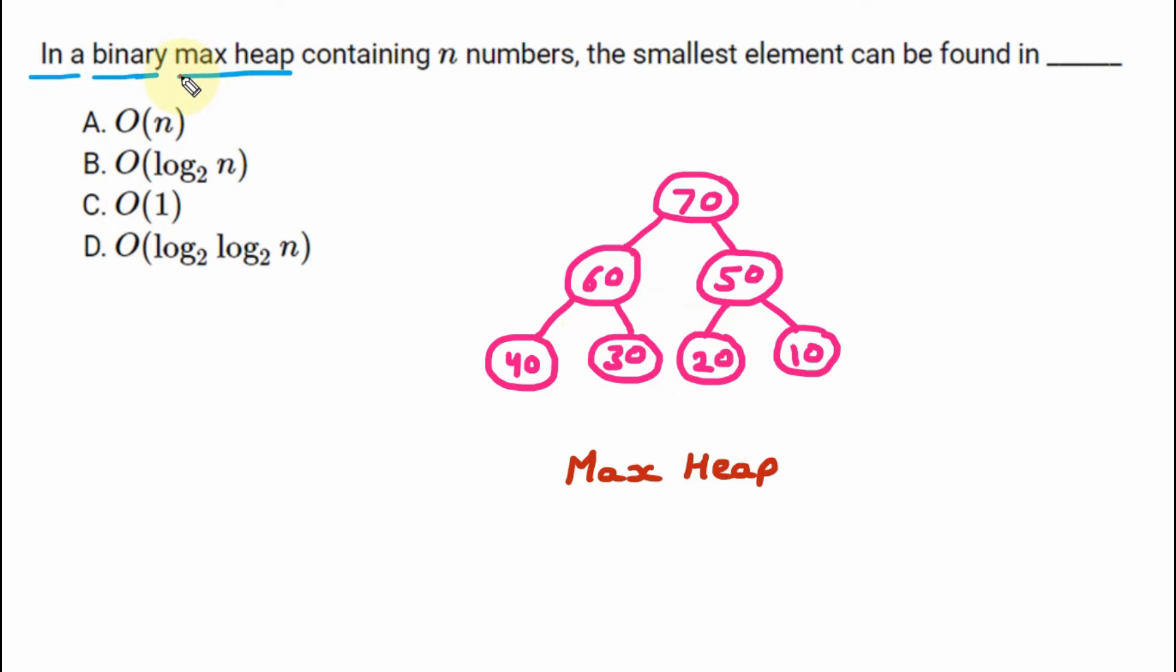So here we have the max heap and we can see that all the nodes, let's say 70 have 2 children, 60 have 2 children, 50 have 2 children, means they can have maximum 2 children. That's why it is binary. So binary max heap we have constructed hypothetically for understanding.